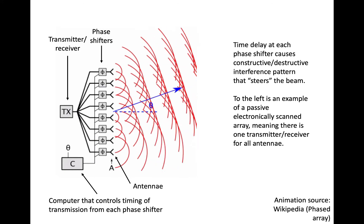In this animation, the bottom antenna transmits first, followed immediately after by the other antennas proceeding upward on the figure. In this example, the combined waveform moves at an angle toward the direction of the last antenna to transmit.